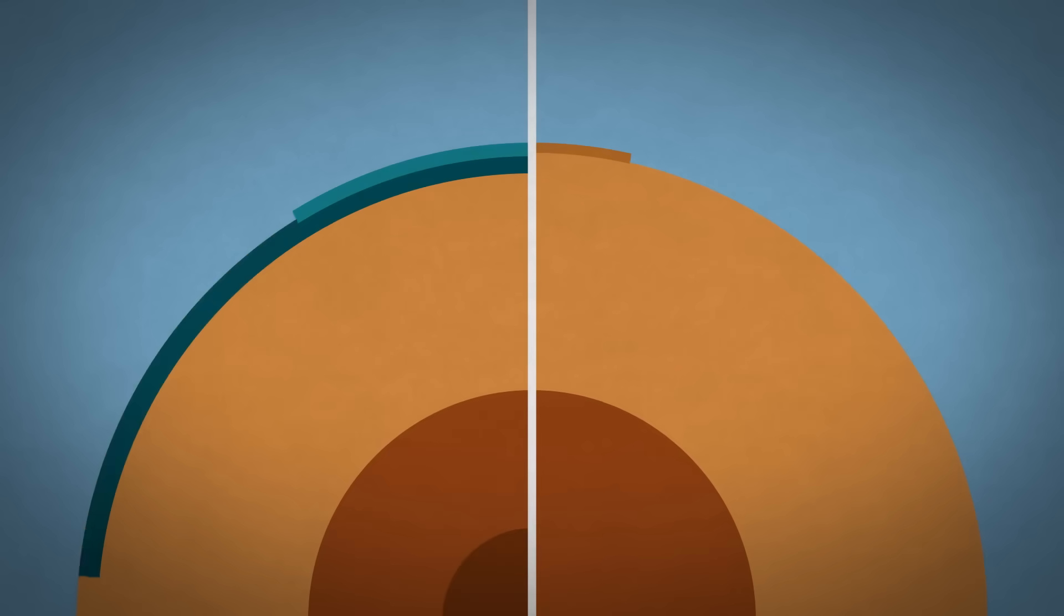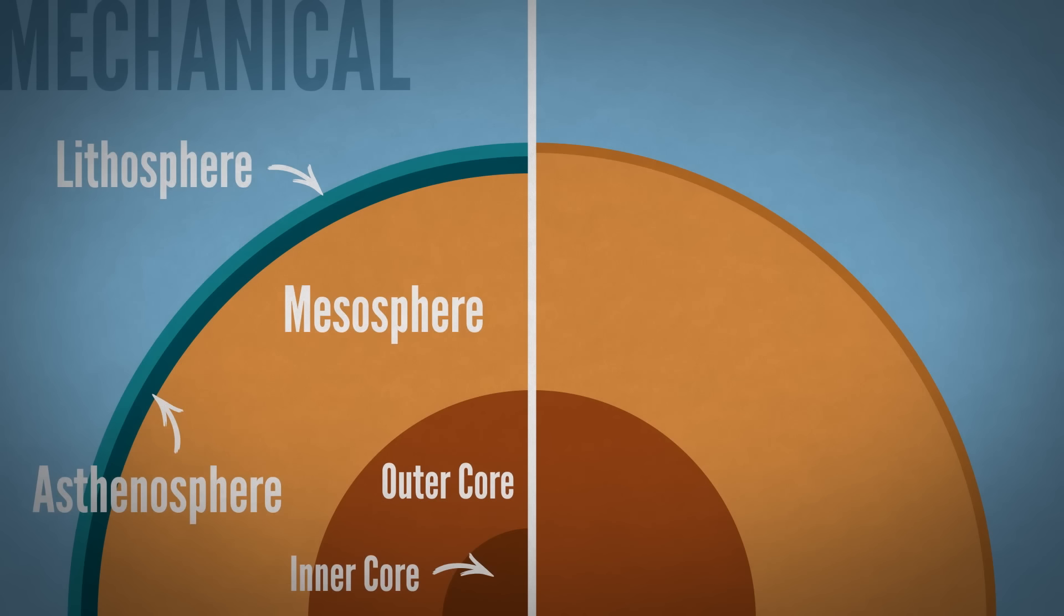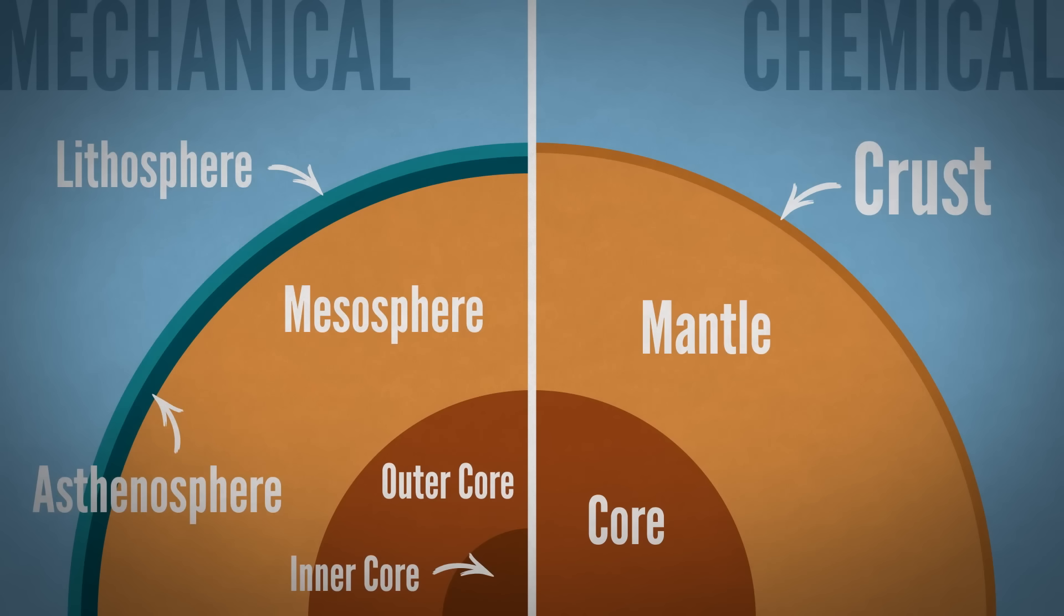The main layers of the Earth are organized in the same way. Depending on whether they're divided up by how they squish around or what they're made of, geologists give different names to the different layers of the Earth.